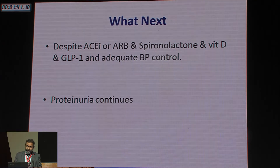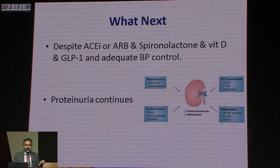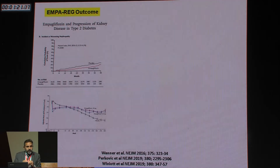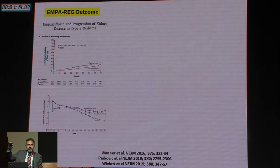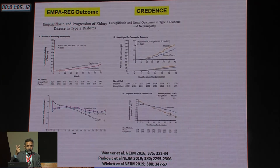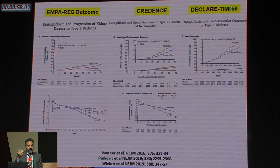Probably the best remaining option is SGLT2 inhibitors — multiple mechanistic and clinical trial data support their use. EMPA-REG with empagliflozin showed reduction in progression of renal impairment and flattening of eGFR decline. Similarly, CREDENCE with canagliflozin and DECLARE with dapagliflozin both showed reduced progression to renal impairment. All three major SGLT2 inhibitor trials demonstrate renoprotective benefits.